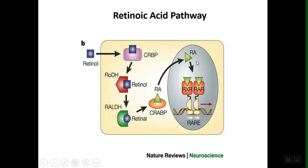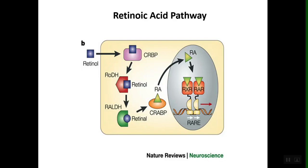Retinoic acid is now in the nucleus of the cell in a placental individual — a human in this case. Retinoic acid can be in its cis or trans form. If it's in its cis form, it will bind RXR, and if it's in its trans form, it'll bind RAR. These form a heterodimer on the RARE complex — the retinoic acid response element — which is an area on the DNA where this heterodimer binds and turns on this pathway, initiating transcription.